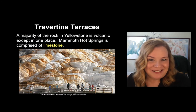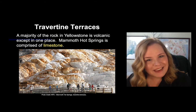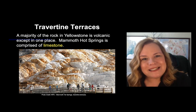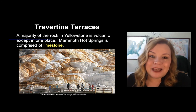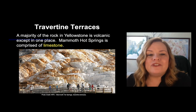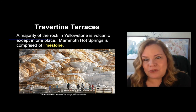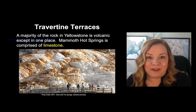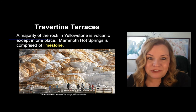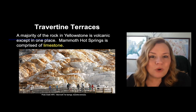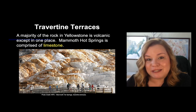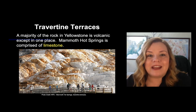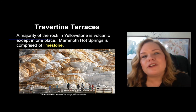That brings me to travertine terraces. You can see these in places like Yellowstone and in some caverns. The majority of rock in Yellowstone is rhyolite, which is igneous. But to make a travertine terrace, you must have had limestone — a carbonate-based sedimentary rock — that has been re-precipitated and turned into travertine.